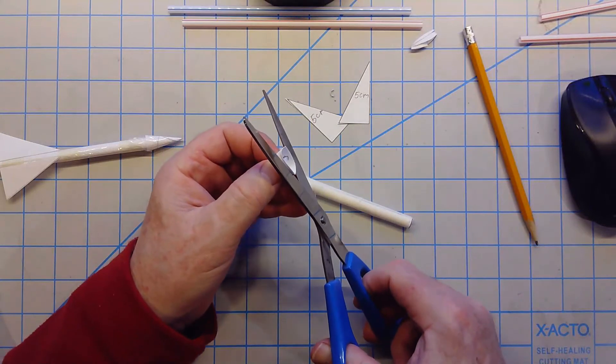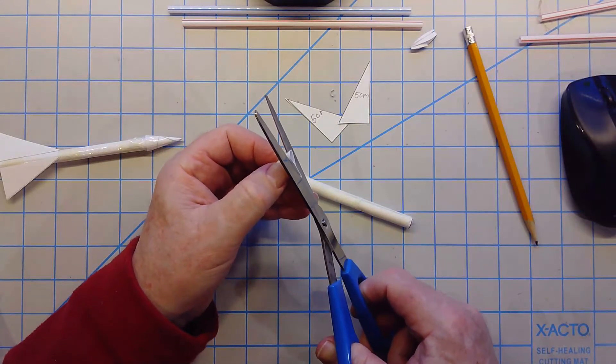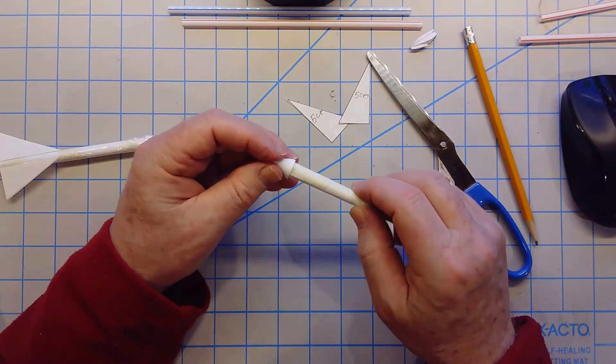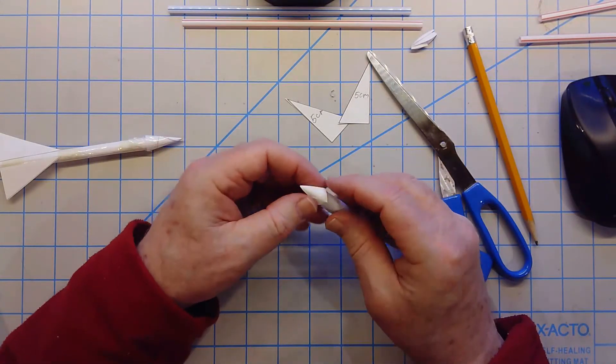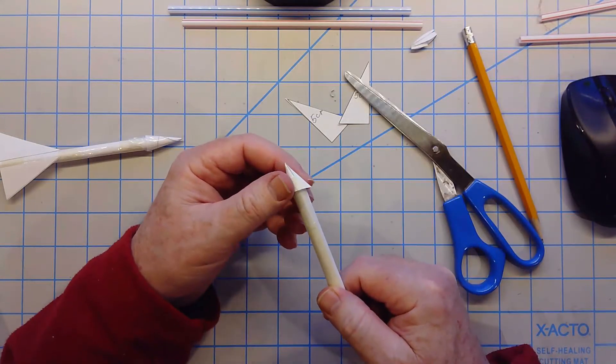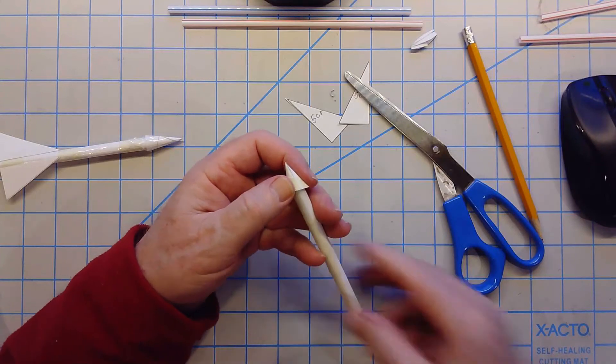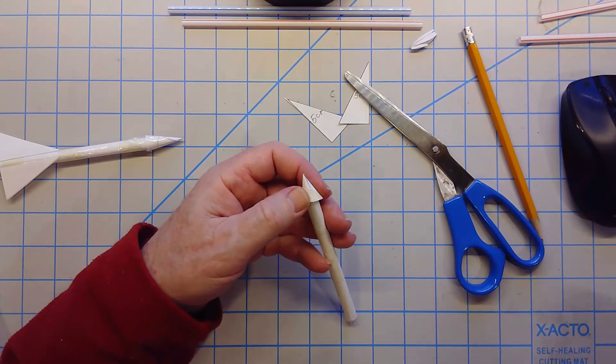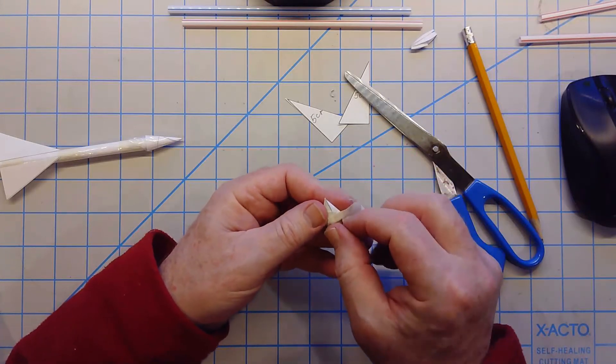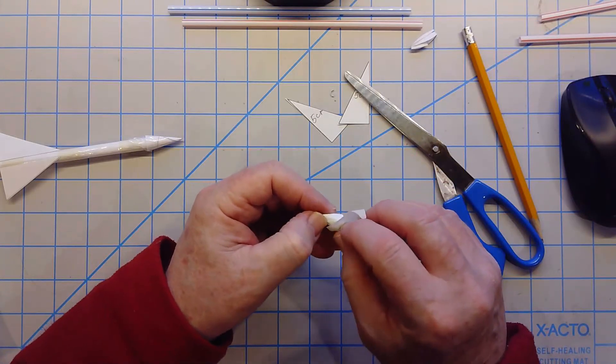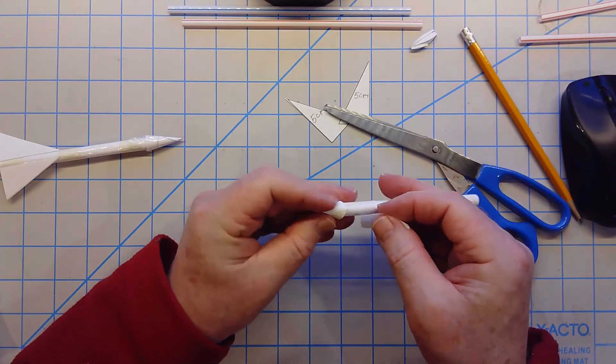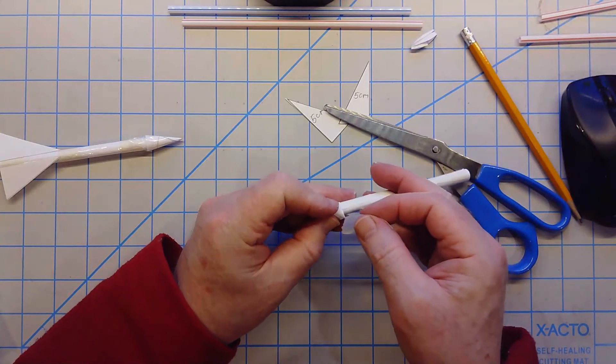And the nice thing about this is if you cut it too small it's pretty easy to make a new one. Okay, I think that's pretty good. So now all you do is tape the top onto the fuselage. I'm just going to use a piece of leftover tape that I have. And see this is why actually scotch tape might be better to use.